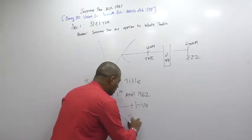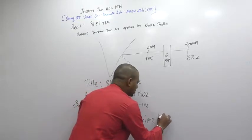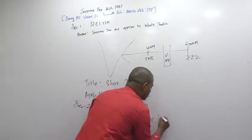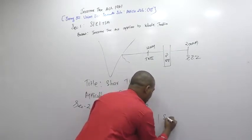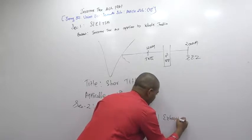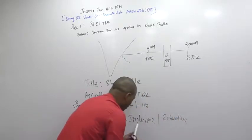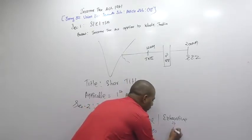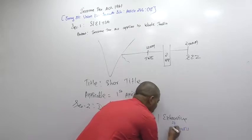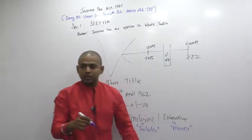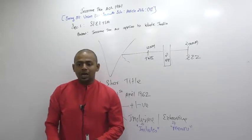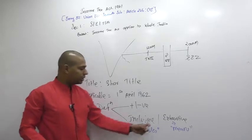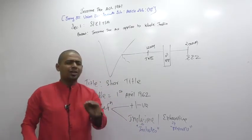Then we have certain definitions which are inclusive in form, and certain which are exhaustive. There is also an exclusive part. An inclusive definition will start with the word 'includes,' whereas an exhaustive definition will start with the word 'means.' These two differences are very important. The 'means' definition is a stricter definition, and the 'includes' definition is the more general definition.